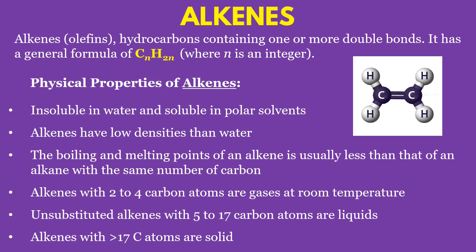The second type of hydrocarbon is the alkene. Alkenes are also known as olefins — hydrocarbons containing one or more double bonds. It has a general formula of CnH(2n), where n is an integer.